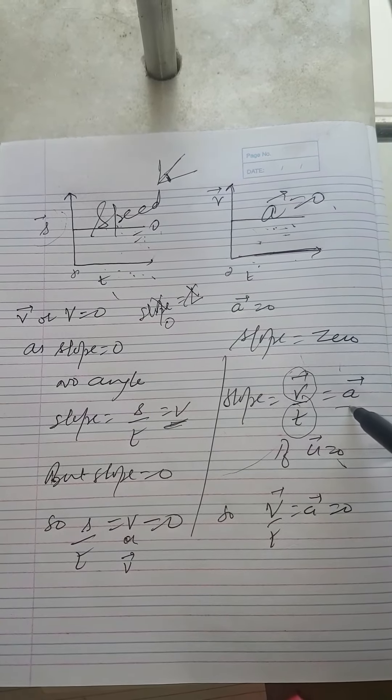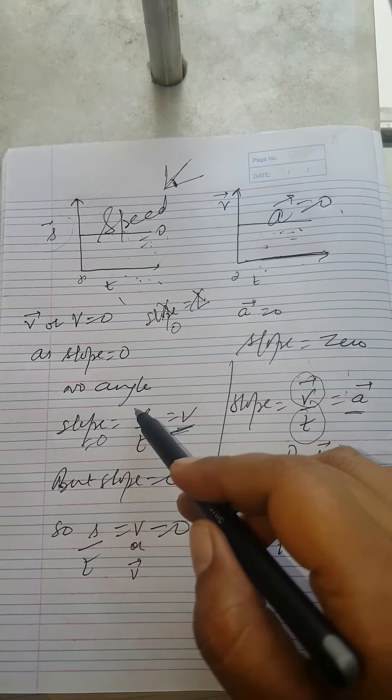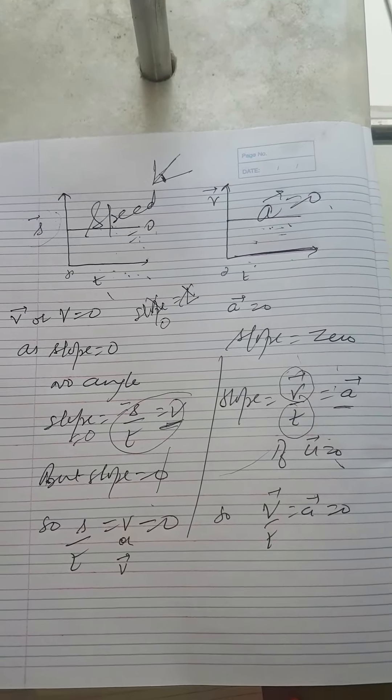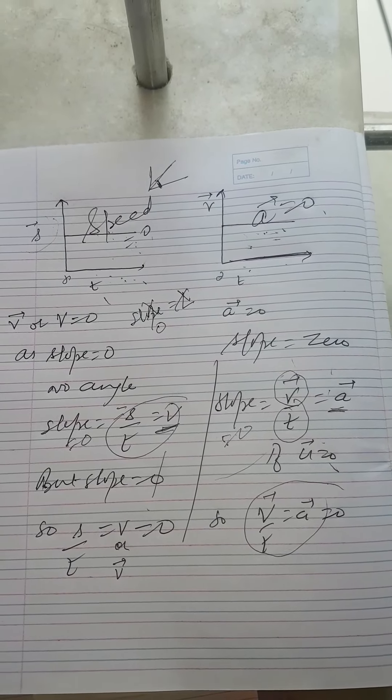So when this slope equals to zero, then automatically these quantities will become zero. Similarly for this case, when slope equals to zero, then acceleration is also zero.